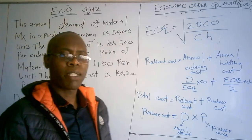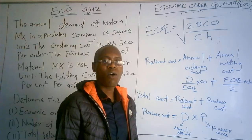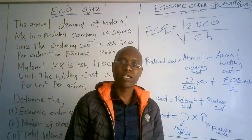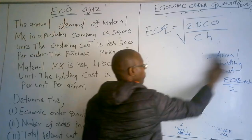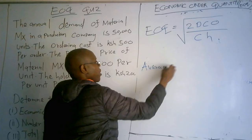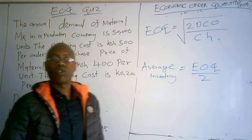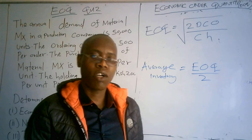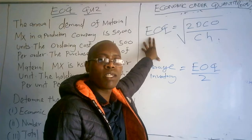Those are the formulas you need to know. They can also ask you to calculate average inventory. The average inventory is always EOQ over 2. All these subsequent questions depend on the EOQ answer you calculate first, so you must be careful and extra vigilant to get the correct EOQ.